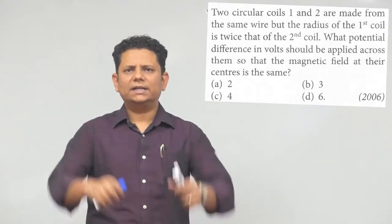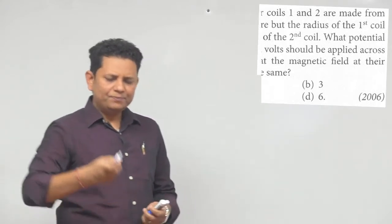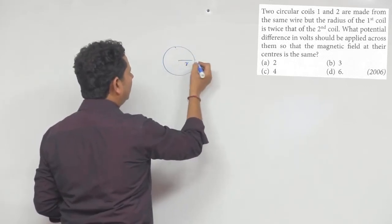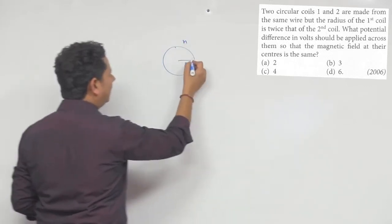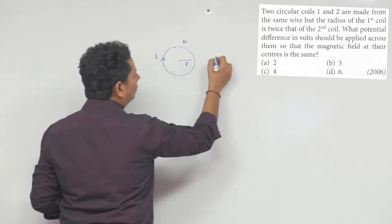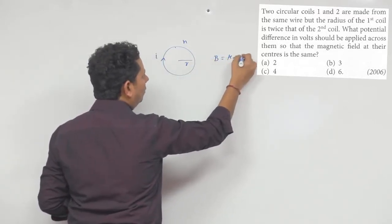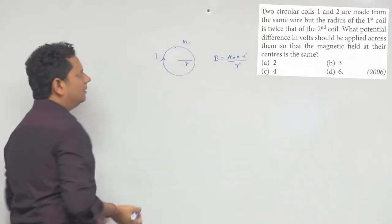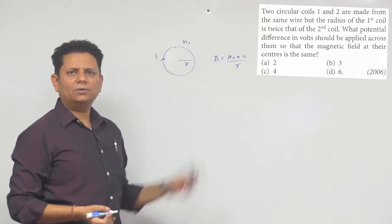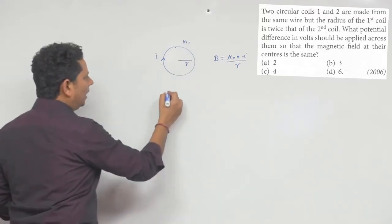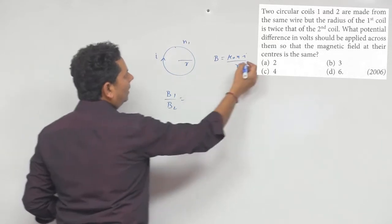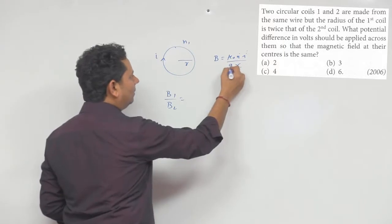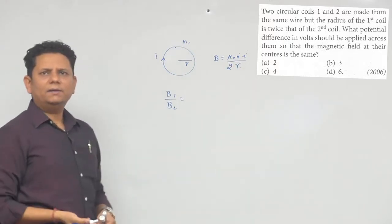Simple सवाल है, थोड़े से data manipulation करना पड़ेगा। यह पता है कि अगर एक कोईल है जिसका radius R है, number of turns N है और current I जा रहा है, तो B = μ₀NI/2R होता है। B is proportional to N, I, and inversely to R.